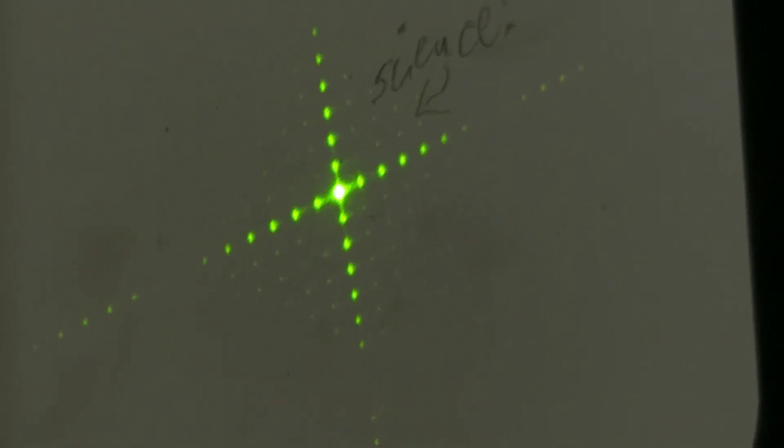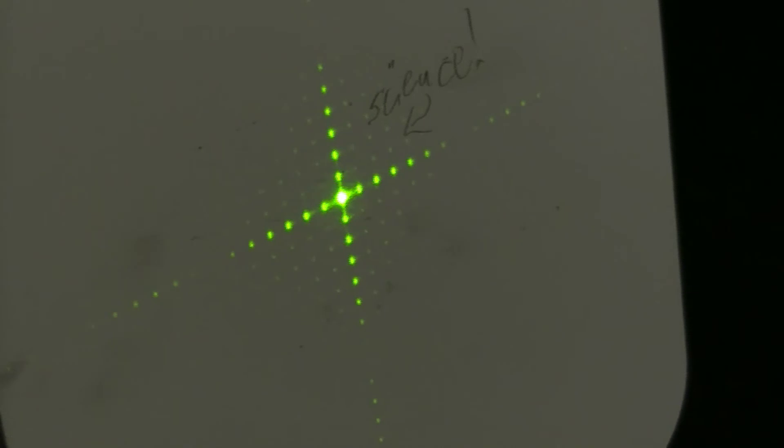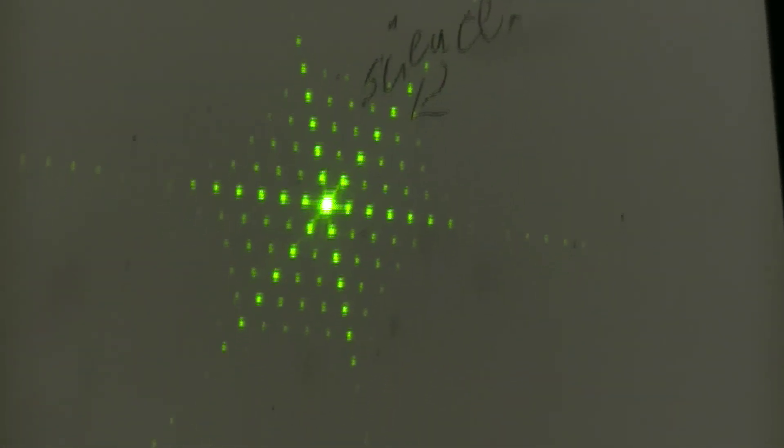Want to see some two-dimensional things? Two-dimensional patterns? Why not? We got the thing here, don't we? Let's look at if you have a square array of just holes. So this would be a square pattern of holes with a laser shining on it? Yep. And what about a hexagonal one? Put a hex on you. We have to club, yo.